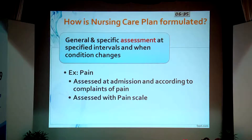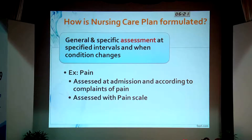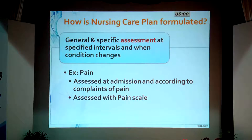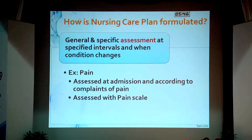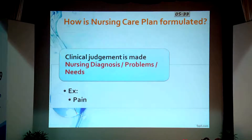How does the nursing care plan get formulated and what should a nurse do? When the patient gets admitted, we do an initial assessment — that's part of the NABH requirement. There should be a complete head-to-foot assessment at the time of admission, and apart from that, area-specific assessments related to the affected system have to be carried out. On a day-to-day basis, when the nurse sees the patient, she has to give importance to the patient's issues and identify their problems. For example, if a patient says they have pain, the nurse assesses using a pain scale and score, and identifies pain as the problem.